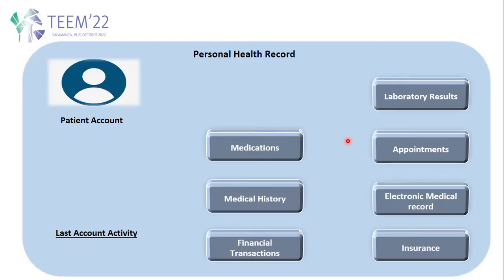Here is a prevalent model for the PHR environment, where the patient has access to the parts that he or she needs, such as medications, medical history, financial transactions, insurance, electronic medical records, appointments, and laboratory results.